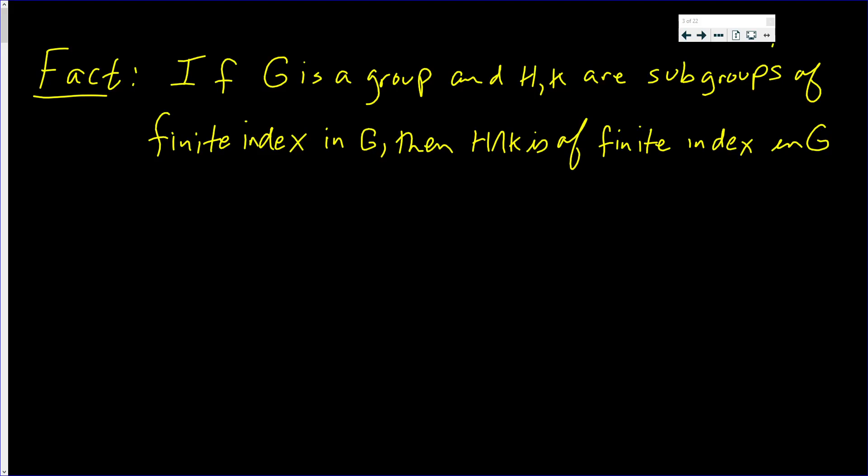In this video we're going to prove the following fact: if G is a group and H and K are subgroups of finite index in G, then H intersect K itself is of finite index in G.